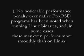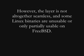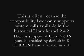In some cases, Linux binaries may even perform more smoothly on FreeBSD than on Linux. However, the compatibility layer is not altogether seamless, and some Linux binaries are unusable or only partially usable on FreeBSD. This is often because the compatibility layer only supports system calls available in the historical Linux kernel 2.4.2, though support for Linux 2.6.16 syscalls is enabled by default in 8-current and available in 7.0 and later.